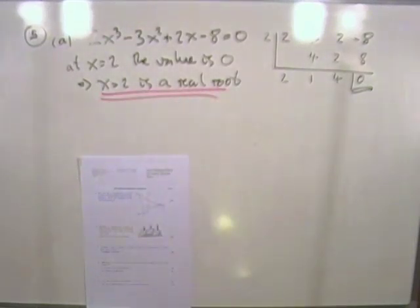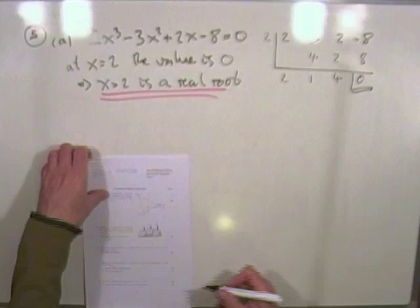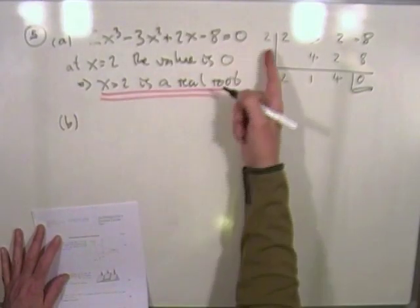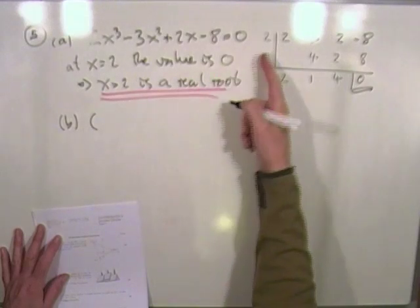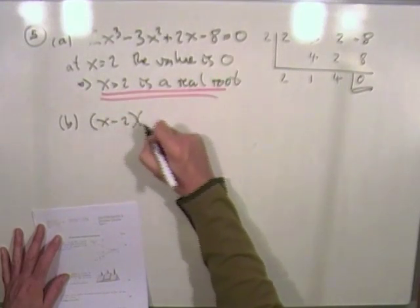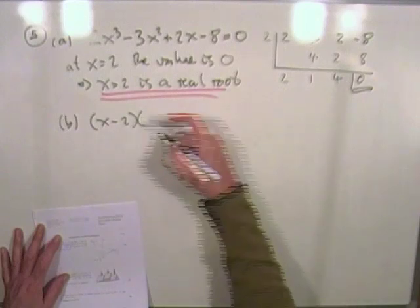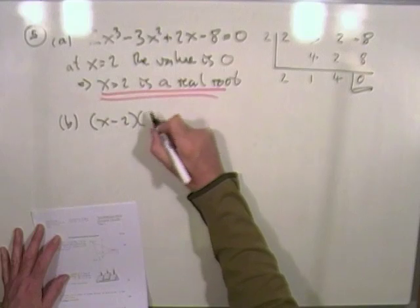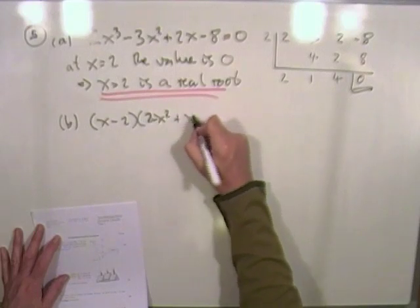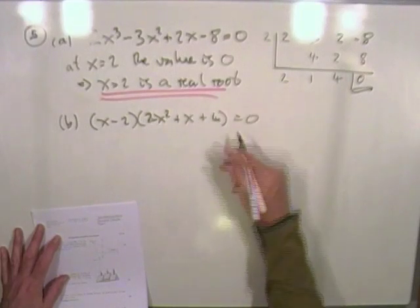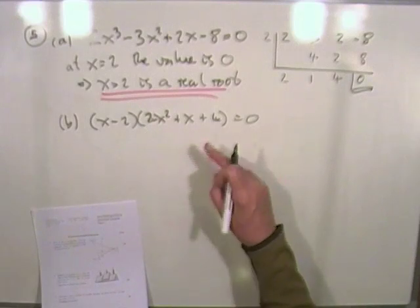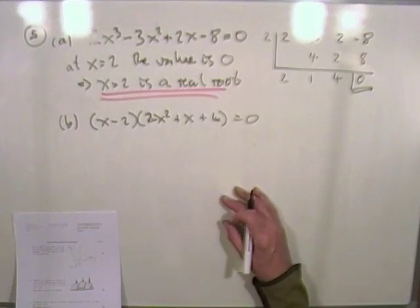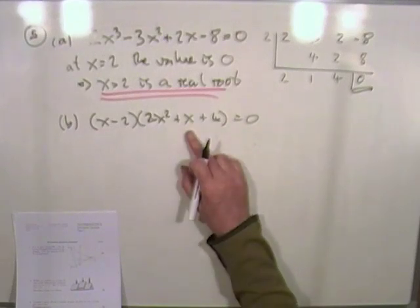Right, so that was part A. Now part B says show algebraically. Right, well, I've done this part already, this division, so I could carry in and carry the factorization. So I know that if 2 is a root, x minus 2 is a factor, and that this polynomial here is the other factor. It's just degree 2, so that'll be 2x squared plus x plus 4 equals 0. And the factorization of that will give me the other roots, if it factorizes, or if in fact it's got any other real roots at all. You can check that with the discriminant.